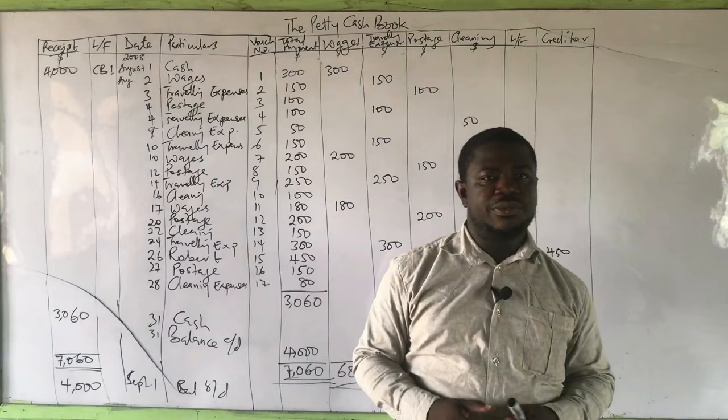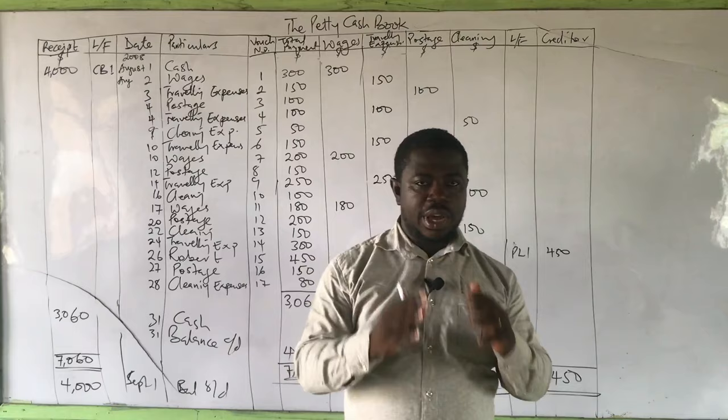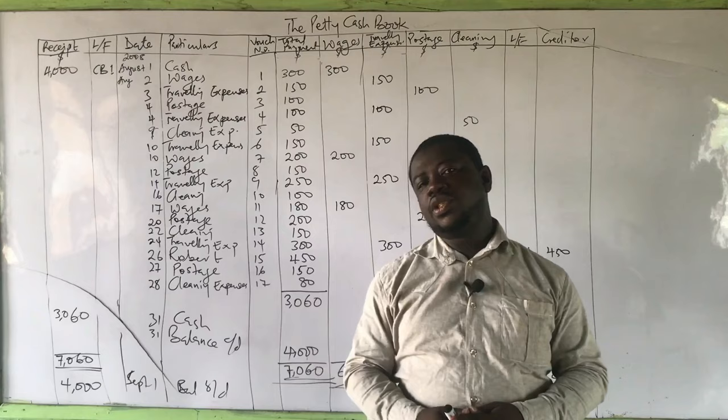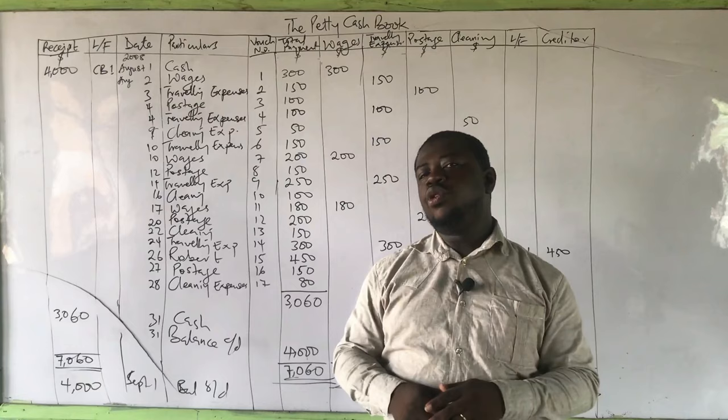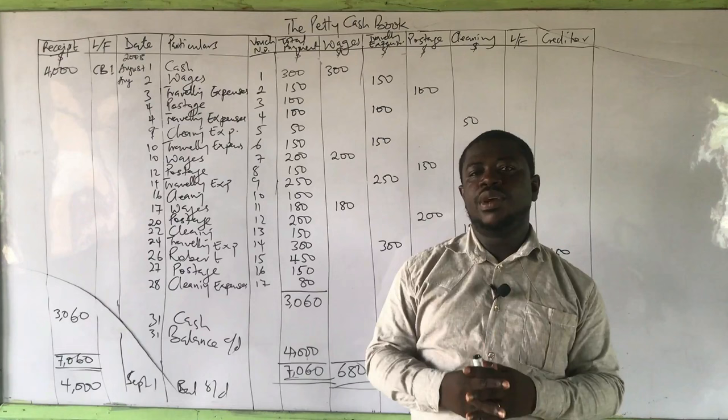You are also supposed to post these entries into the ledgers — opening accounts for wages, travelling, postage, cleaning — and posting all the totals to the debit side of those accounts, since they are expenses. That will be shown in the next video. Please subscribe to the channel, share this video, comment, and let us know what you think. This is Fog Accountancy Tutorials. We will meet again for Part 2.